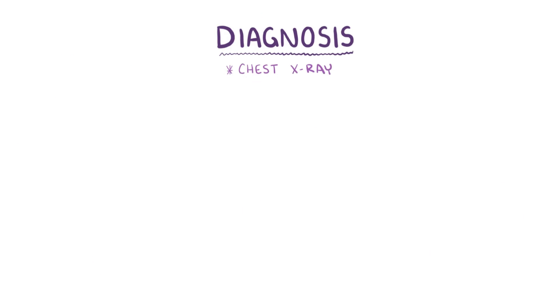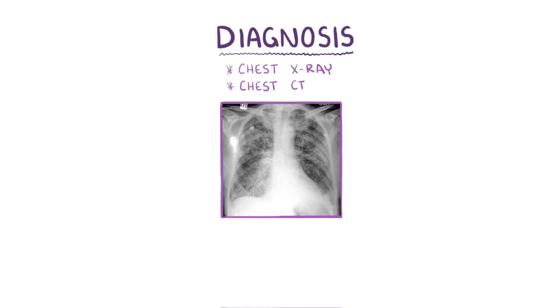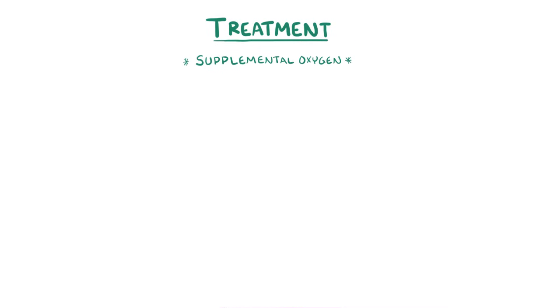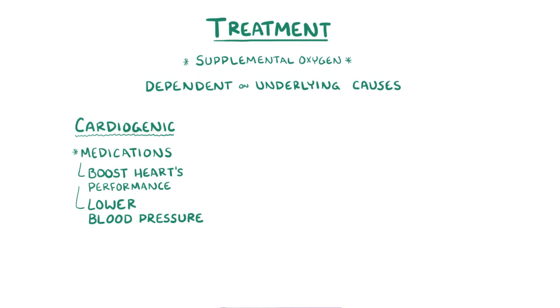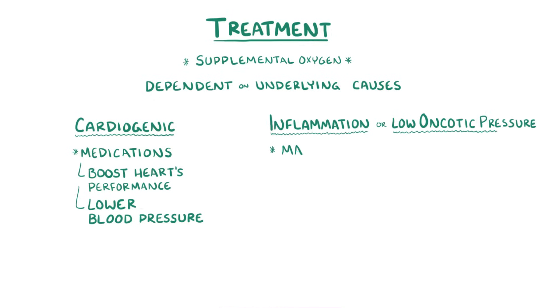The diagnosis of pulmonary edema is usually made with a chest x-ray or chest CT scan that shows fluid in the interstitial space. Treatment typically involves giving supplemental oxygen, and other treatments are dependent on the underlying cause. If the cause is cardiogenic, then medications aimed at boosting the heart's performance or lowering the blood pressure can be helpful. If the cause is related to inflammation or low oncotic pressure, then managing that illness will help resolve the pulmonary edema.